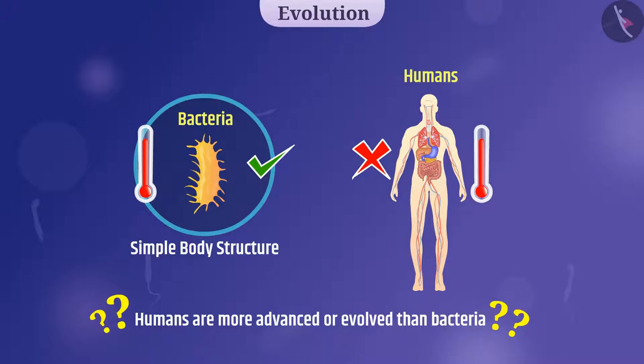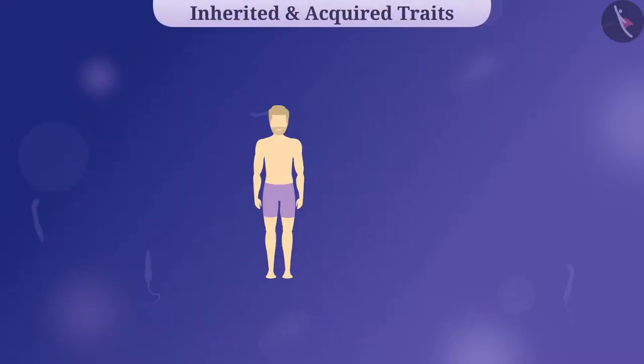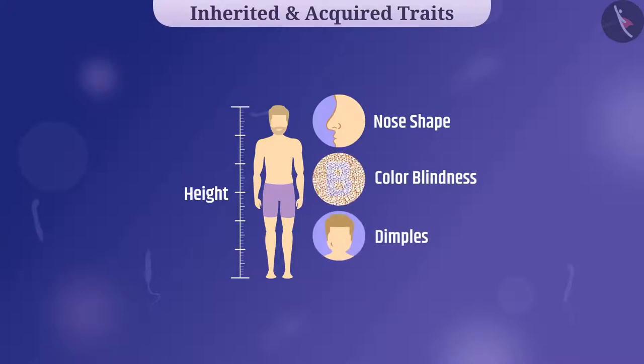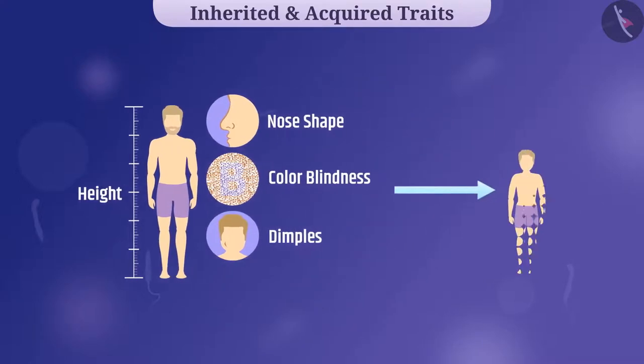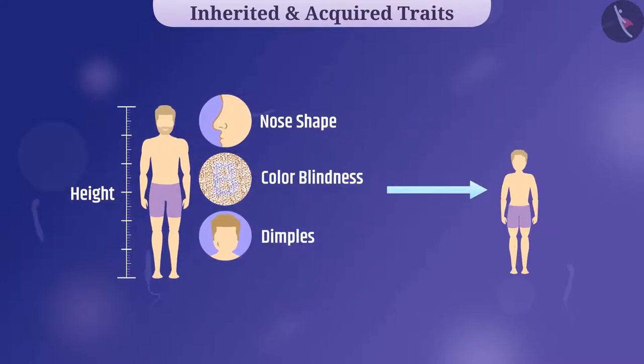Now, let's discuss another aspect of development. Some characteristics such as height, nose shape, color blindness, dimples can be transmitted from one generation to the next. Such characteristics are called inherited traits.